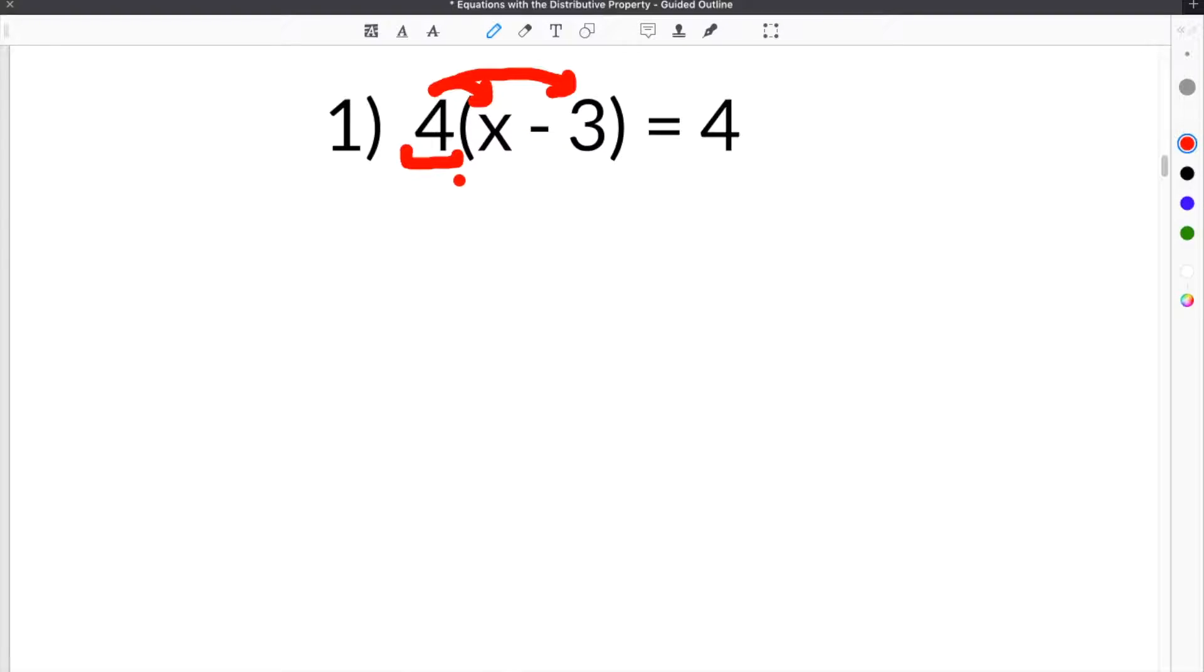In order to do that, you're going to take the constant in front and multiply it by all of the terms on the inside of the parentheses. In the case of this equation, we're going to take the 4 and multiply times the first term, which is our x. Then we're going to also take 4 and multiply it by the second term in the parentheses, which is 3.